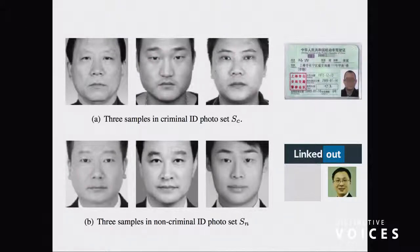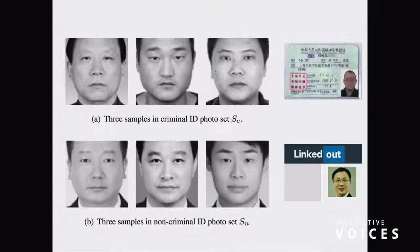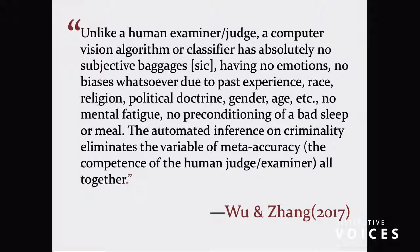Here's the statement read in the paper: 'Unlike a human examiner judge, a computer vision algorithm or classifier has absolutely no subjective baggage, no emotions, no biases whatsoever due to past experience, race, religion, political doctrine, gender, age, etc. No mental fatigue, no preconditioning, etc.' And when I do these kinds of things in class, students yell out — this is of course BS — because not only is it just as bad as humans, it's many times worse. So you go to the results section and there's a claim that there's this angle theta between the nose and the corners of the mouth, and this curvature rho, that was the distinguishing feature between the criminals and non-criminals.